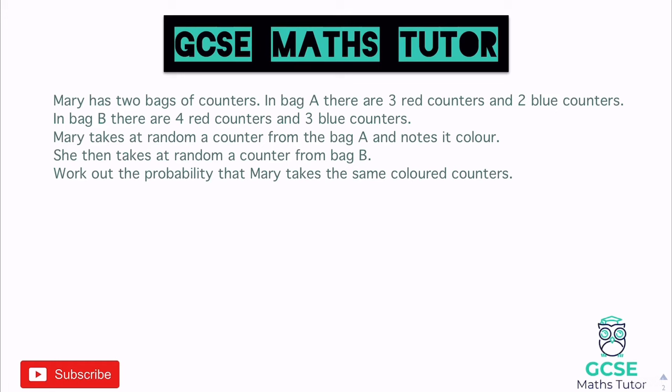This next question: Mary has two bags of counters. In bag A there are three red and two blue; in bag B there are four red and three blue. Mary takes at random a counter from bag A and notes its color, then takes at random a counter from bag B. This is an independent event because they're two different bags — taking a red from bag A doesn't affect the probability in bag B.